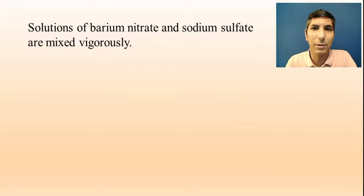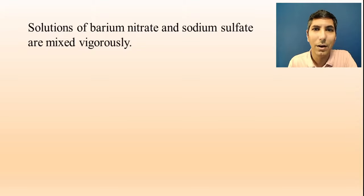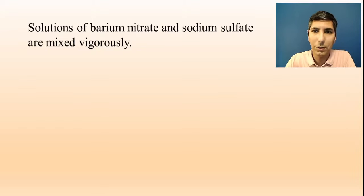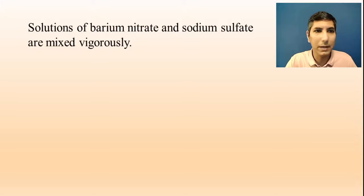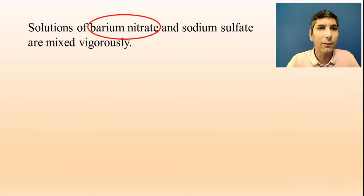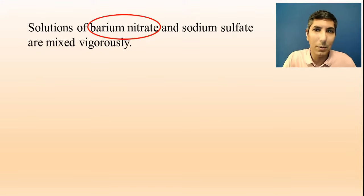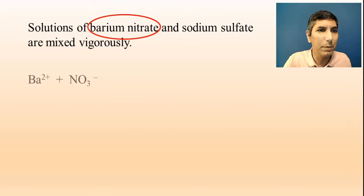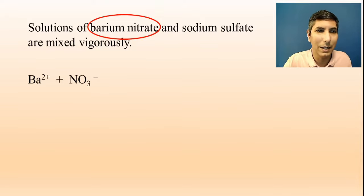Let's see what happens when solutions of barium nitrate and sodium sulfate are mixed vigorously. The first thing that you want to do is isolate your reactants and write them in ionic form if possible. So in this first one, we have barium nitrate and we know that nitrates are soluble, so we need to write that in its ion form. So that would be barium 2+ and nitrate ions.